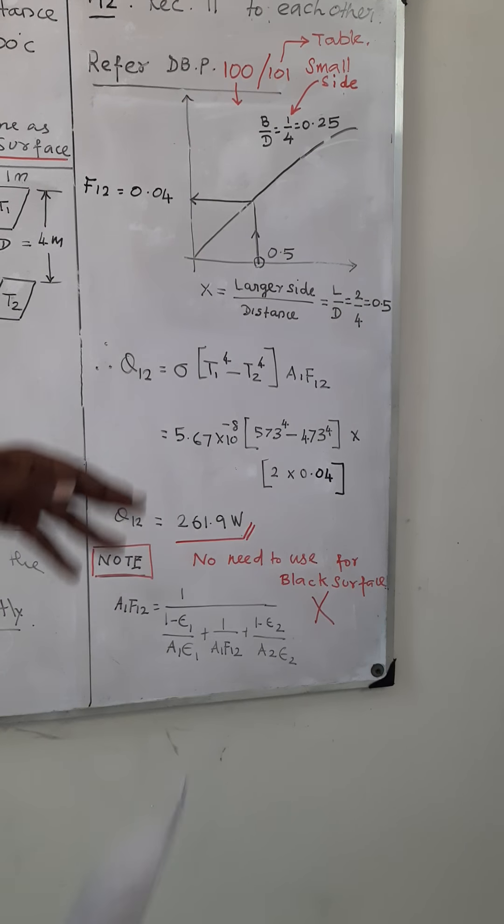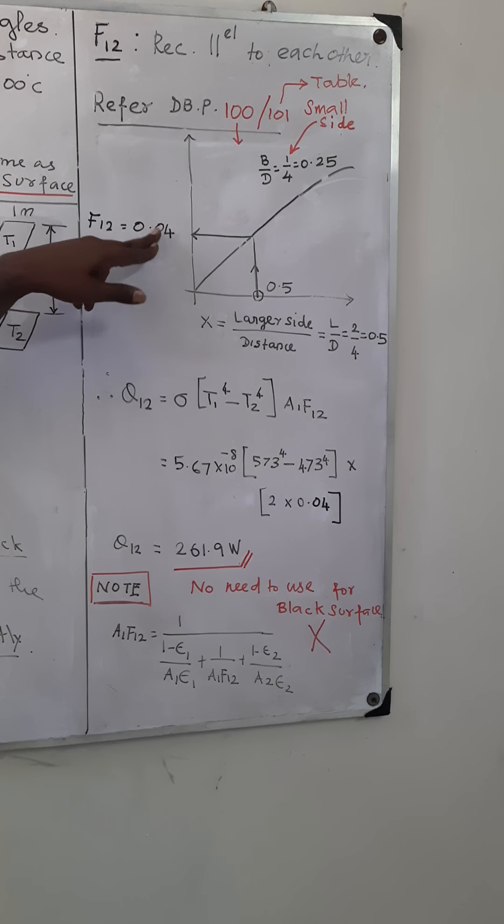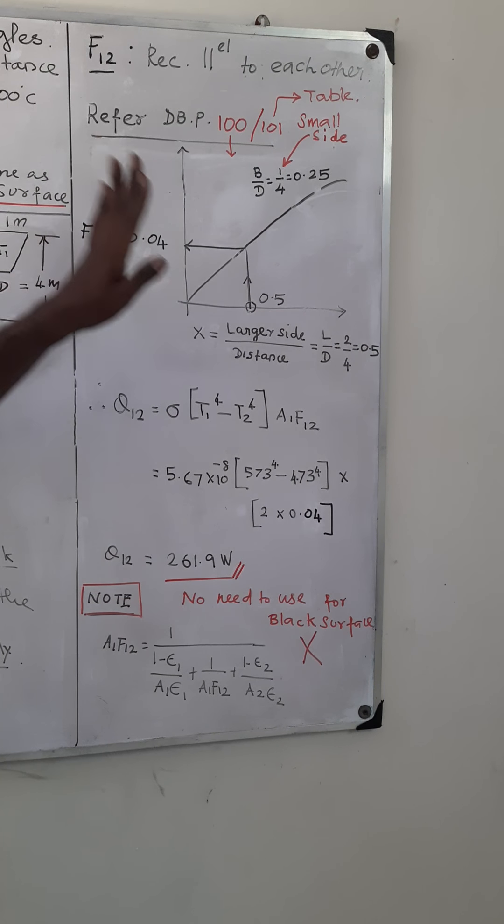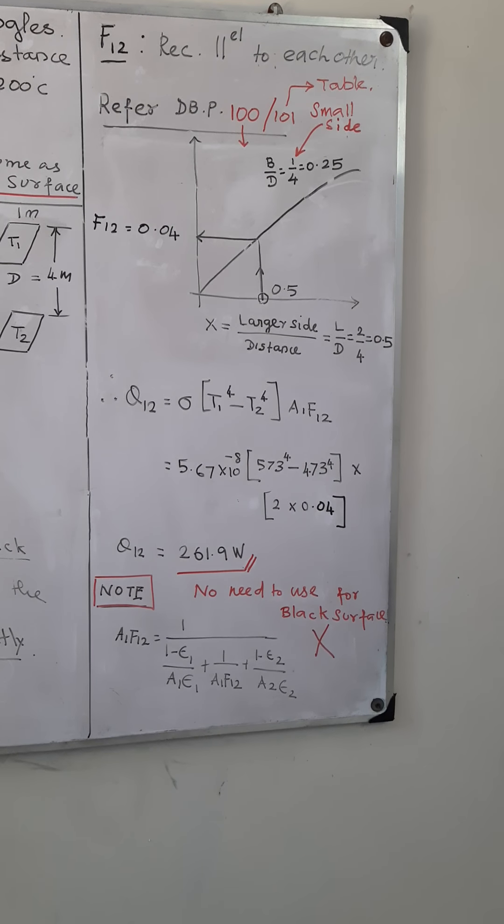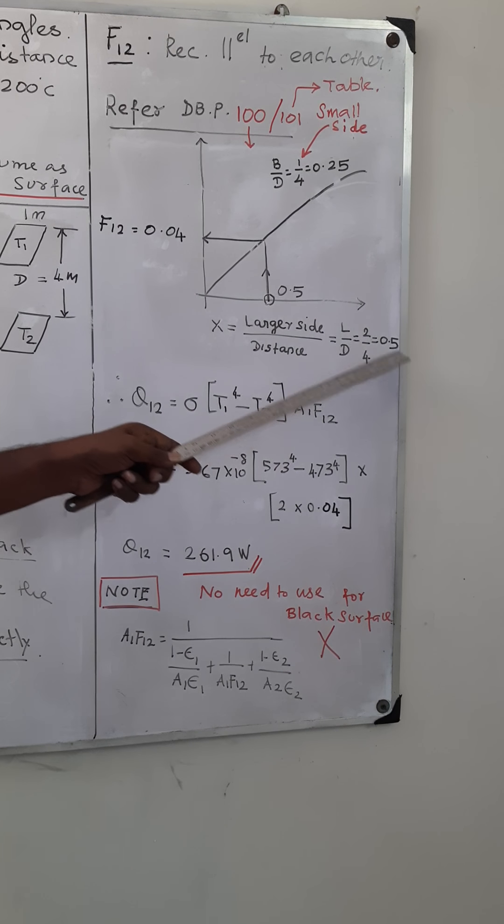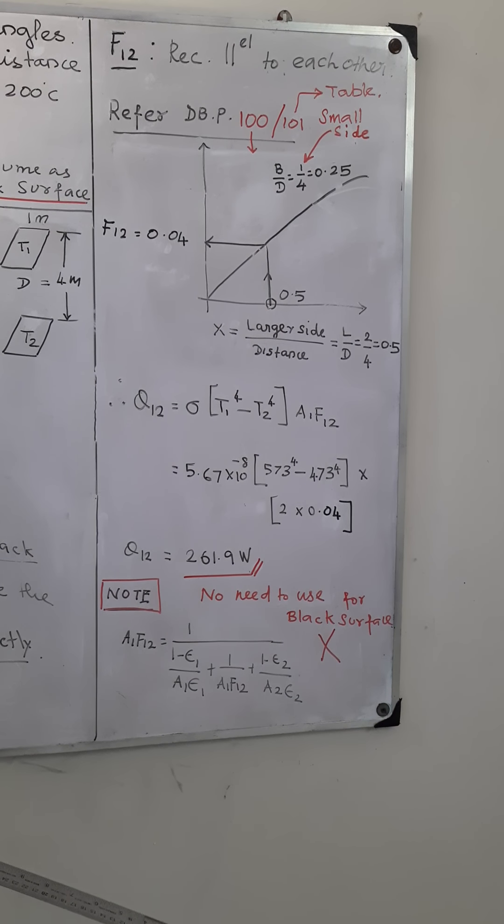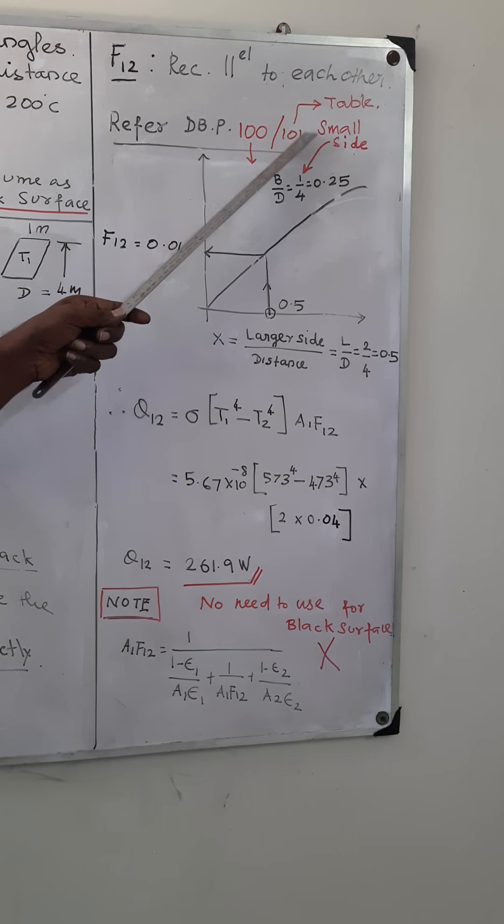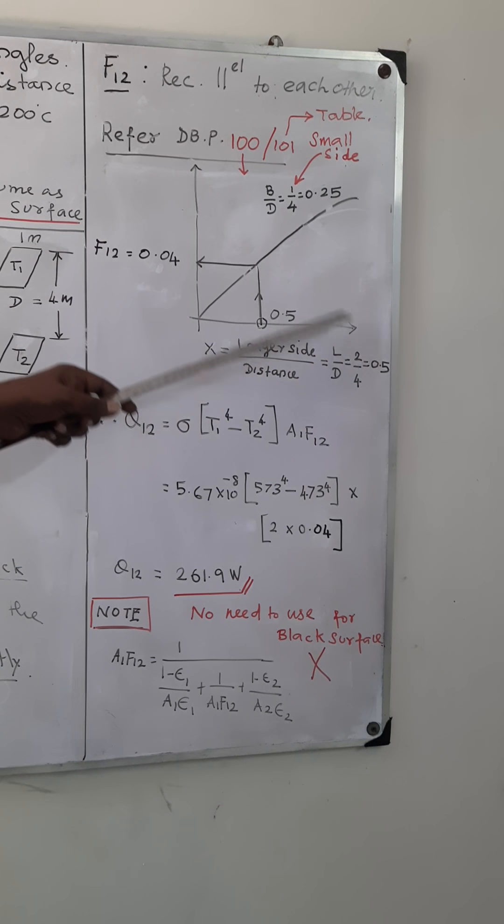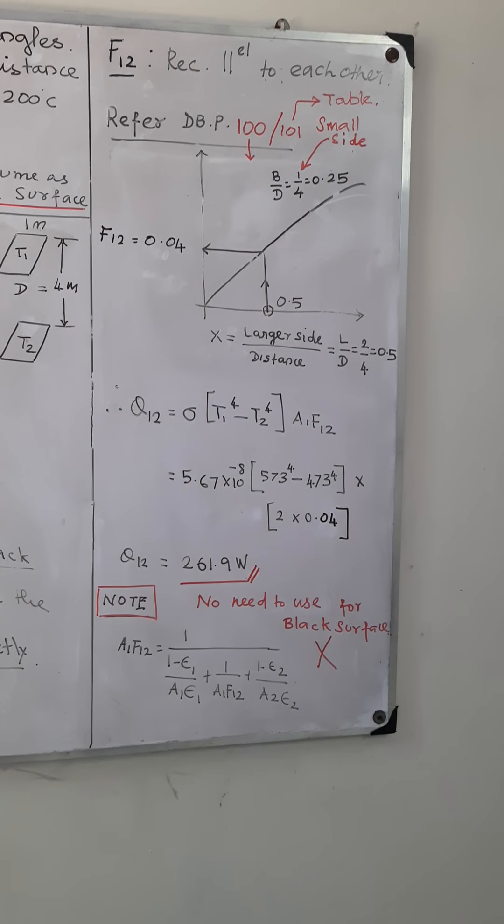So if you are going to use a table, you will get the exact four-digit answer. But in the graph, it's a very rough method, but it is available for all values. So according to the data, you can use a graph. Unless you have exact values like 0.2 or 0.4, you can go for a table.